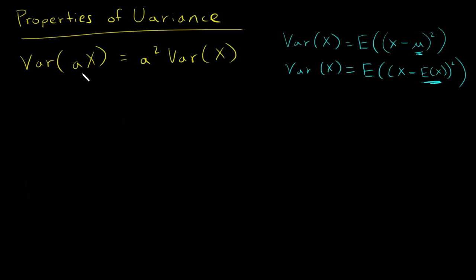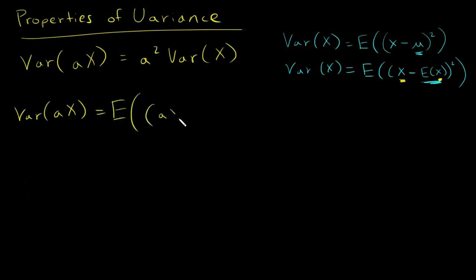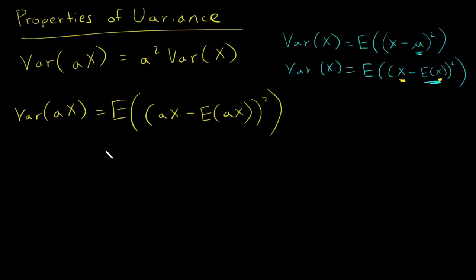So let's go ahead and use this and figure out what the variance of a times x is. So the variance of a times x — everywhere I see an x, I want to plug in a times x. So I have the expected value of a times x minus the expected value of a times x, and then square it. It's the average squared distance of a times x from the mean of a times x. From here I just need to do some math and simplification.